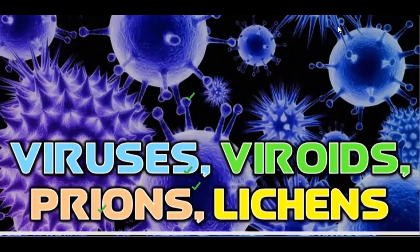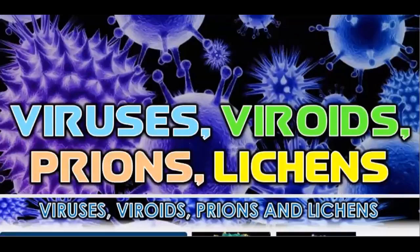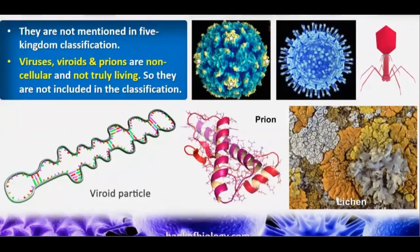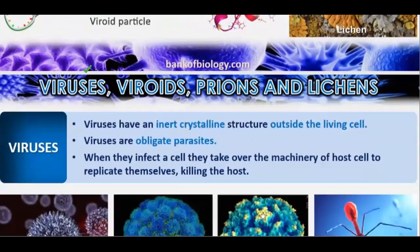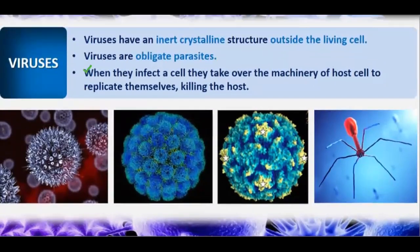Viruses, viroids, and prions are not placed in any kingdom because they are not truly living. Outside a living cell, viruses have an inert crystalline structure — they are non-living outside and living inside. Viruses are obligate parasites. Louis Pasteur named viruses based on the concept of venom and poisonous fluids. Ivanovsky discovered viruses in the mosaic disease of tobacco.